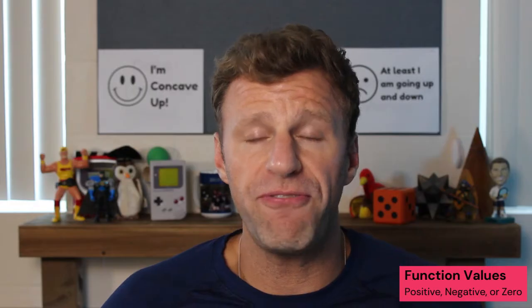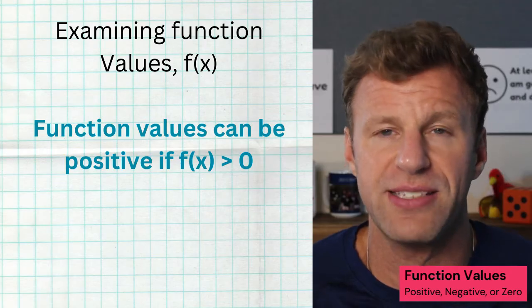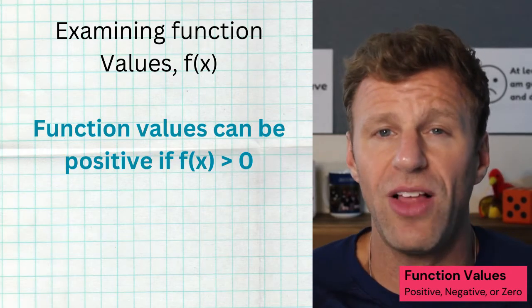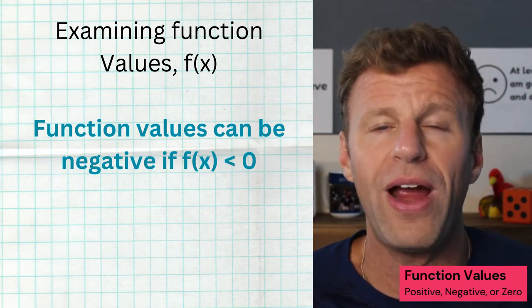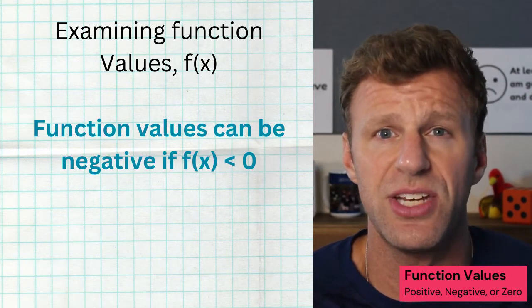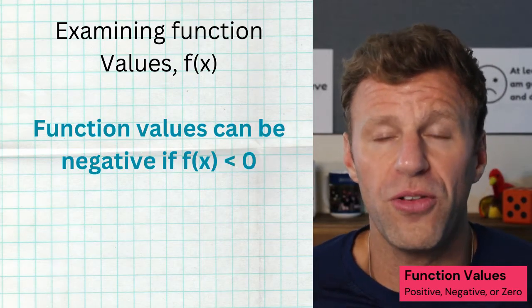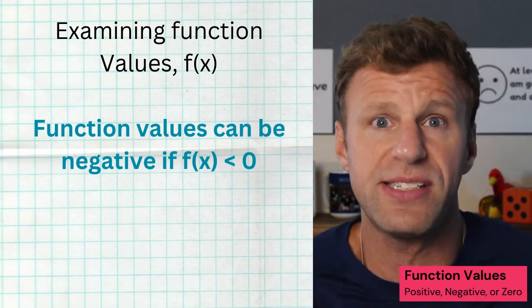When you are examining function values — that's the actual output values, F of X — you can examine when they are positive. A function value is positive where F of X, the output values, is greater than zero. You can also analyze where function values are negative — that's where F of X is less than zero. If you're looking at a graph, the only other thing a function can be besides greater than zero or less than zero is it can be zero.